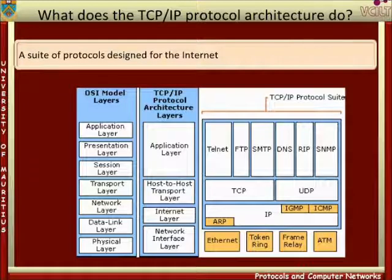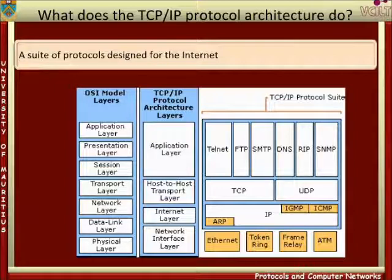The application layer, as shown in the figure, offers standard services to application software running on systems. The transport layer provides end-to-end communication over an internetwork. The internetwork layer deals with the functions associated with specific networks.